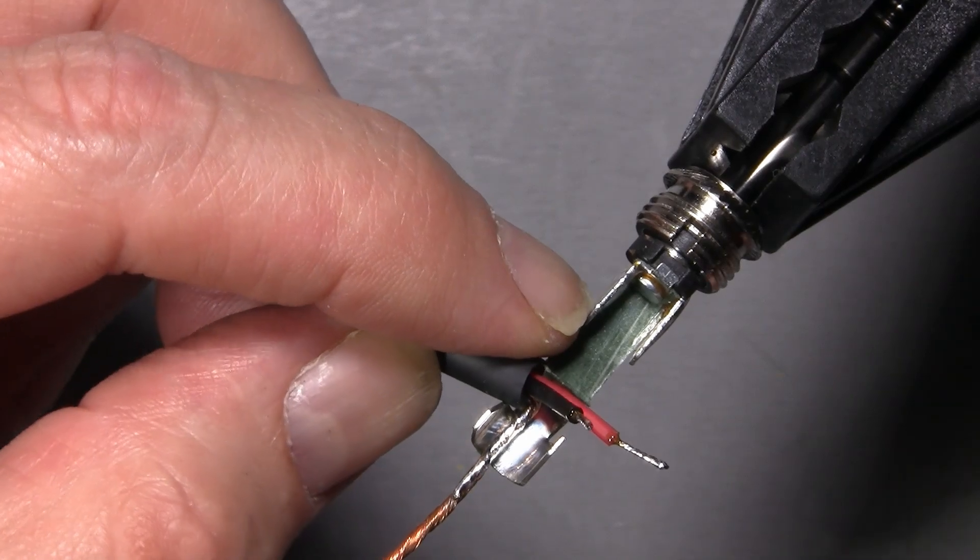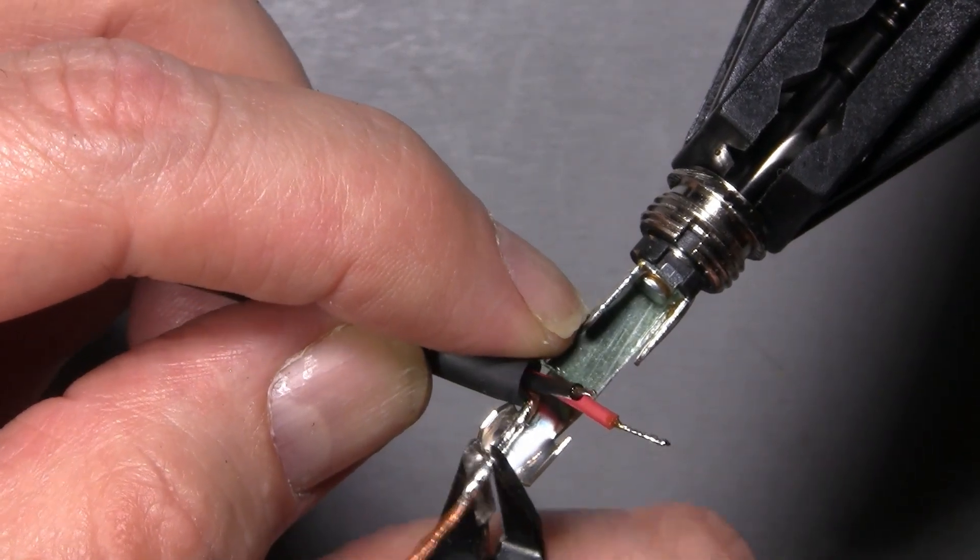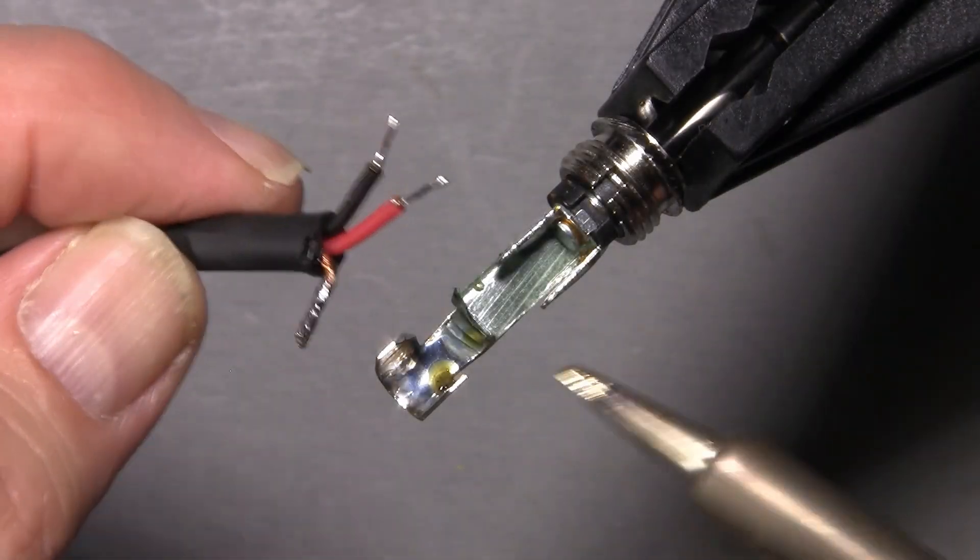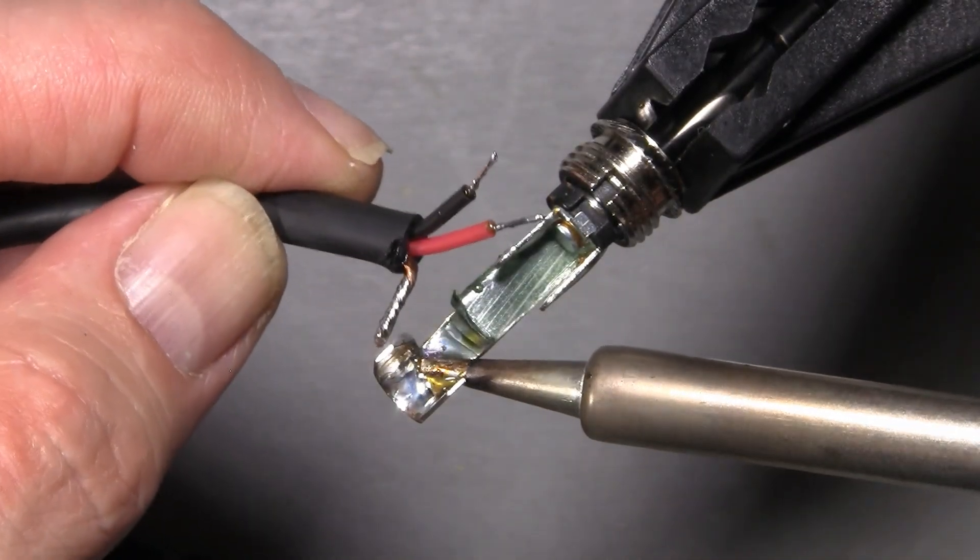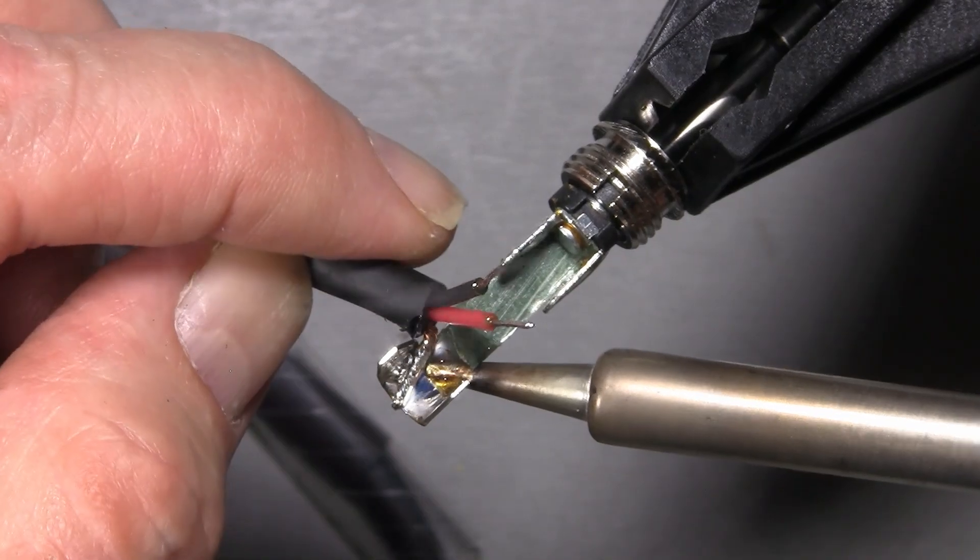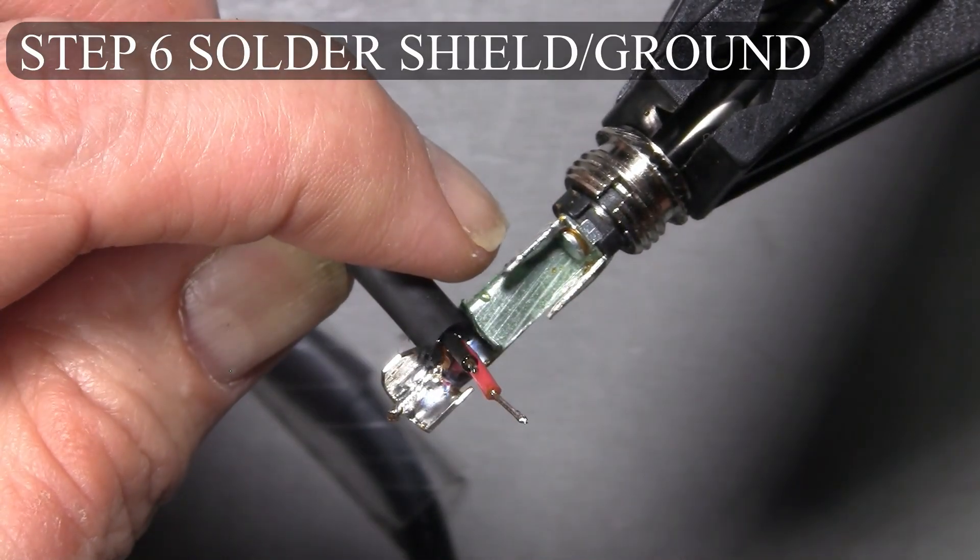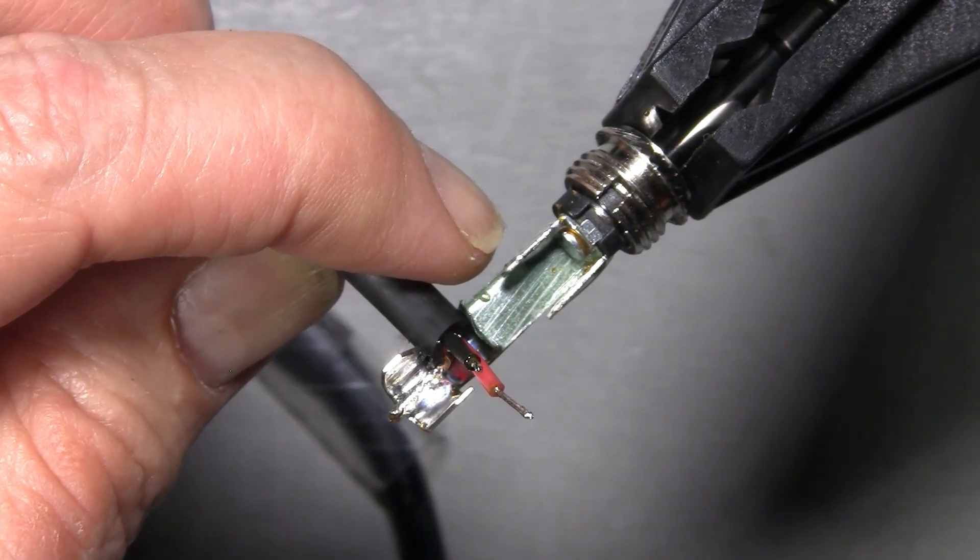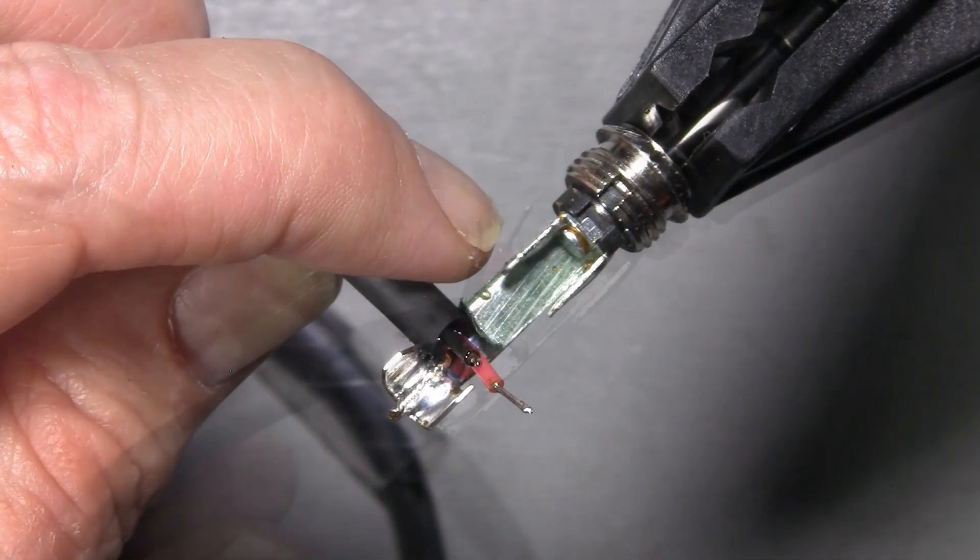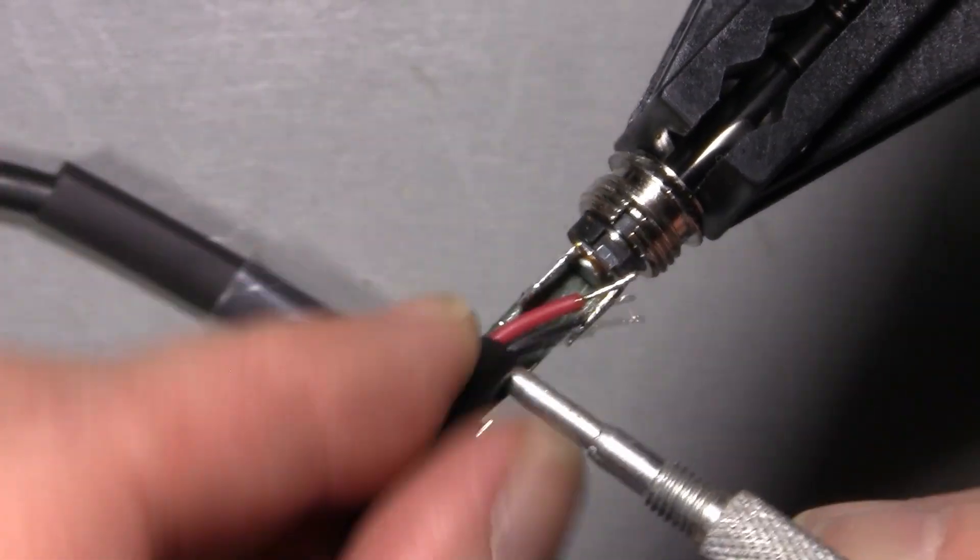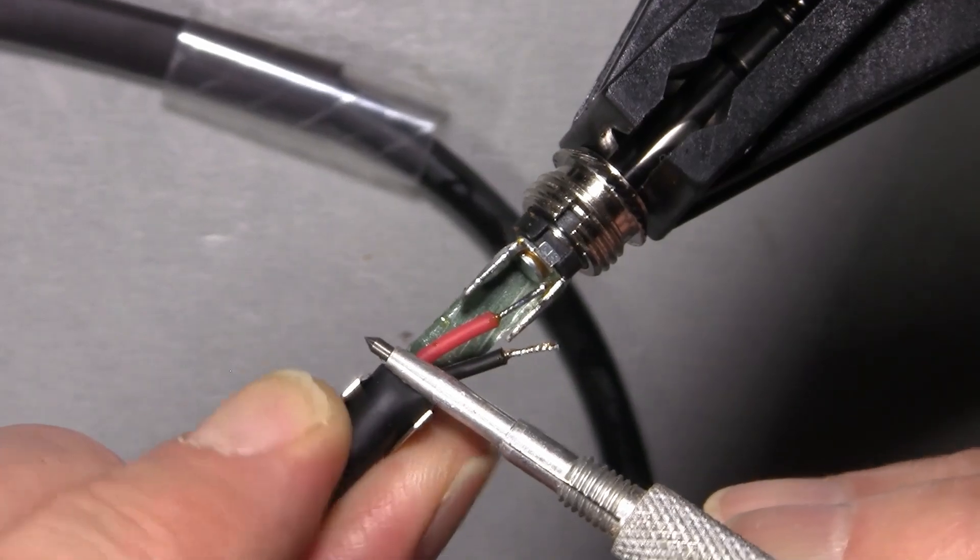Alright, so I'm going to trim off the excess ground. Heat the connector. Wait for all the solder to melt before I apply the wire. Let that cool. Push the insulator down. Pull the rubber jacket around.